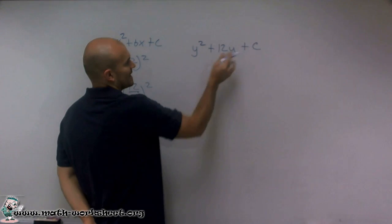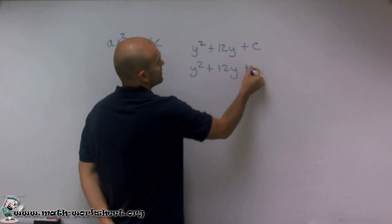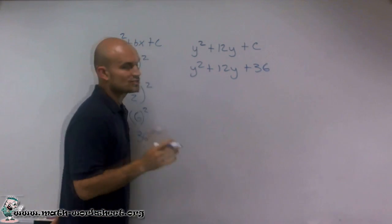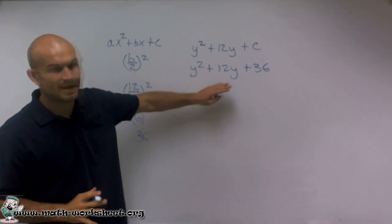what we're going to do is add that as our c. So y squared plus 12y plus 36. So c is going to equal 36.